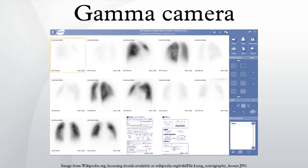A gamma camera, also called a scintillation camera or anger camera, is a device used to image gamma radiation emitting radioisotopes, a technique known as scintigraphy.